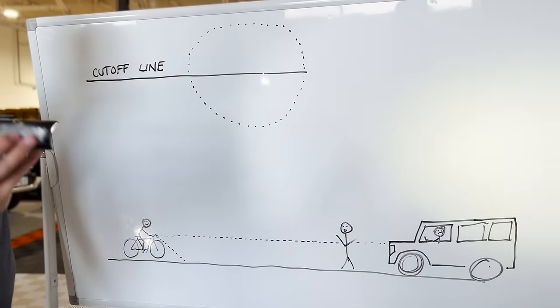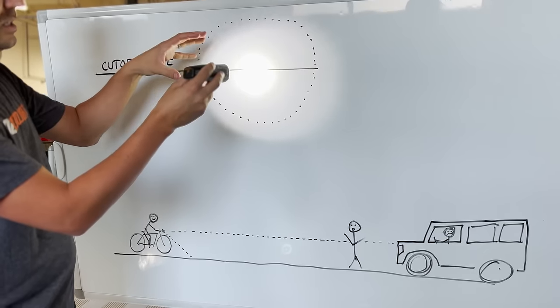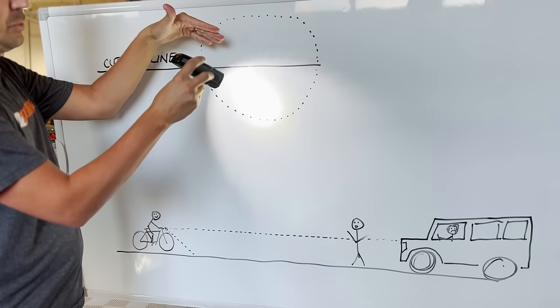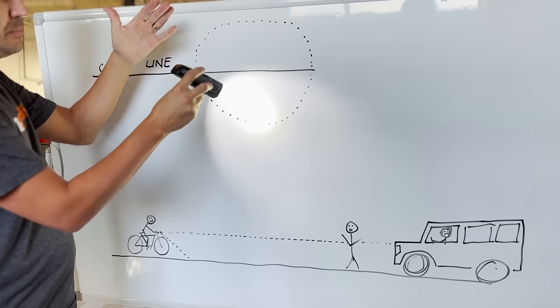When you compare that to a traditional bike light where you've got a circular beam pattern, hot spot in the center, you have to aim the light way down so you're not going above the cutoff line.